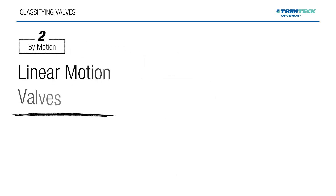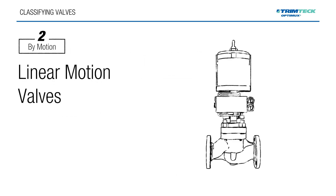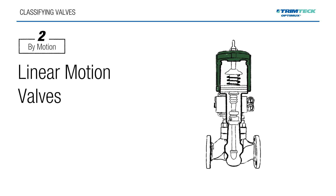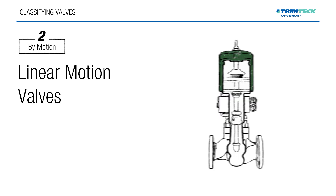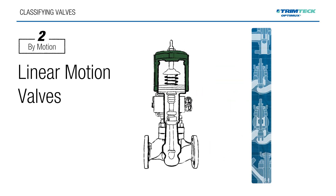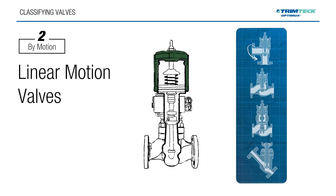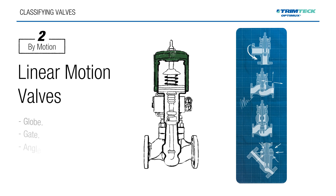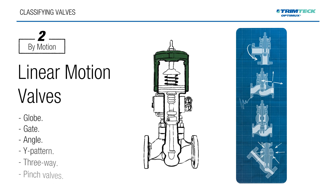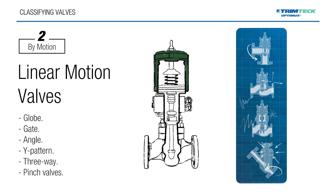Linear motion valves use a sliding stem to push a closure element into an open or closed position. They offer simple designs, easy maintenance, and versatility in size and pressure class. Common types include globe, gate, angle, Y-pattern, three-way, and pinch valves.